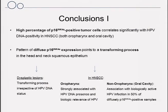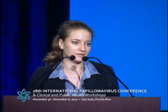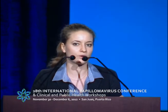To summarize, we found that a high percentage of P16 positive tumor cells correlated significantly with HPV DNA positivity in HNSCC, both oropharynx and non-oropharynx. The pattern of diffuse P16 overexpression points to a transforming process in head and neck squamous epithelium, observed in premalignant and invasive lesions but not in non-dysplastic tissue. In dysplastic tissue, this diffuse pattern points to a transforming process irrespective of HPV DNA status, whereas in oropharyngeal HNSCC, diffuse P16 expression is strongly associated with HPV DNA presence and biological relevance of HPV. In non-oropharyngeal HNSCC, the association with biologically active HPV infection was seen in only 50% of samples showing diffuse P16 expression.